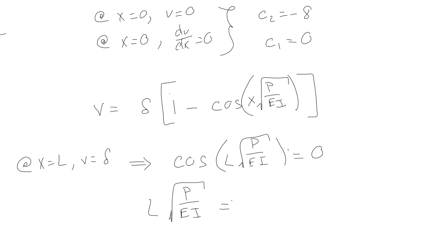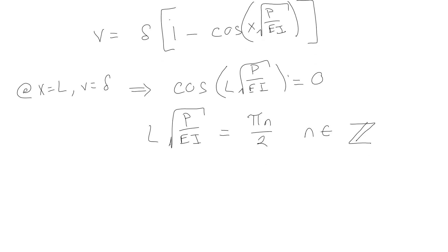Cosines are zero at 90° and 270°, so basically at nπ/2. Before we were looking at when sines went to zero; now it's the cosines. Going through the same process, the critical load comes out to be π²EI over 4L².